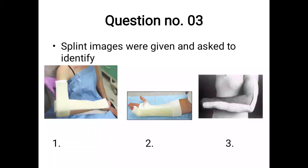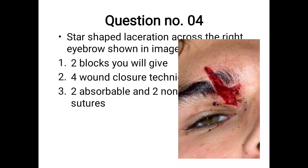In the next question, three images were given — taken from Tintinalli's. You should go through all images and charts from the recent edition of Tintinalli's. In the first image, a double sugar-tong splint was shown. In the second, an ulnar short gutter splint. In the third, a long arm gutter splint. You only need to write the name; no explanation required.